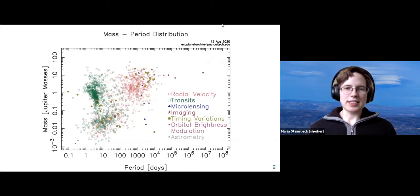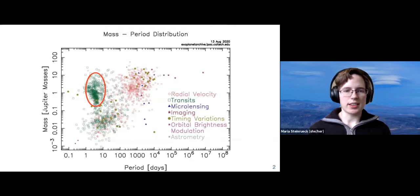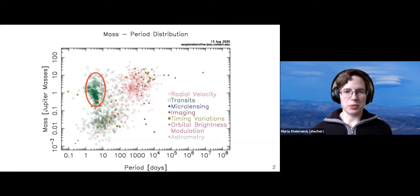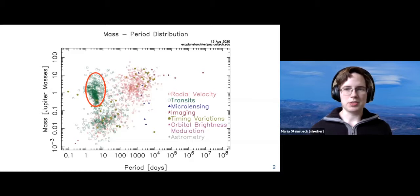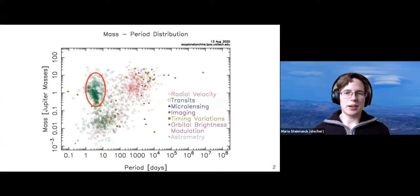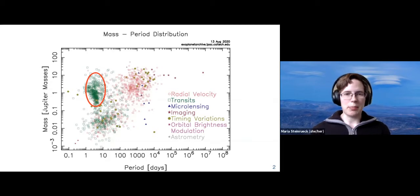These are all exoplanets that have been found to date, shown in the mass-period diagram. Hot Jupiters are in the top left corner, and they are particularly easy to study because they have hot temperatures, hydrogen-dominated atmospheres, large scale heights, and very extended atmospheres that are easy to probe in transit. They have short periods, which makes observations easier to schedule, and a high transit probability. Because of all these properties, they are a fantastic starting point for actually characterizing their atmospheres in detail, which is what I'm interested in.